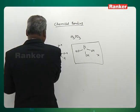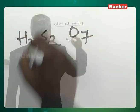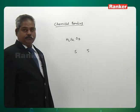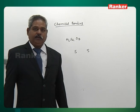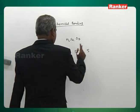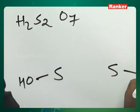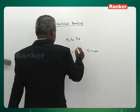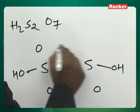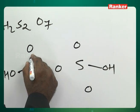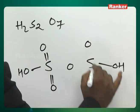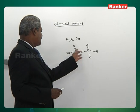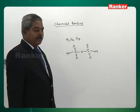H2S2O7: two sulfurs as central atoms. Two hydrogens means two OH groups — distribute equally. Seven total oxygens: five remaining distributed equally (two plus two), with one oxygen acting as a bridge between the two sulfur atoms. Oxygens form two bonds each. That is the structure of H2S2O7.